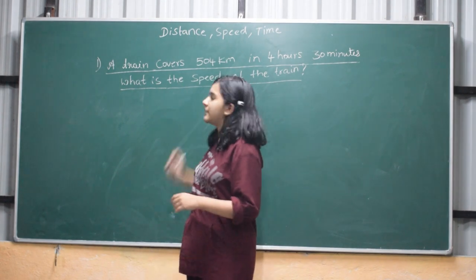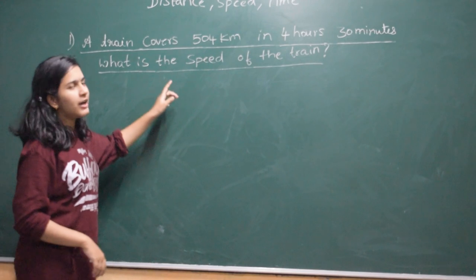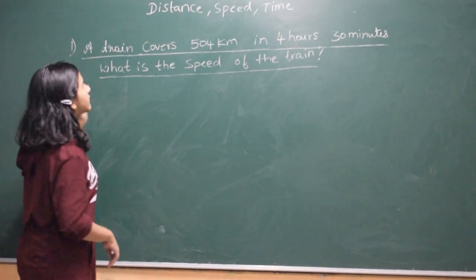So here is our first question. A train covers 504 kilometers in 4 hours 30 minutes. What is the speed of the train?